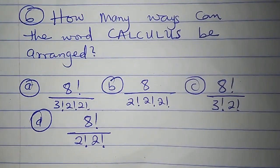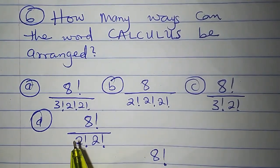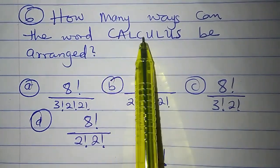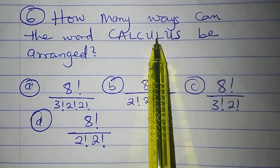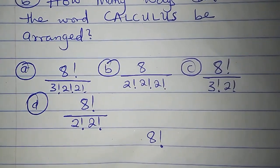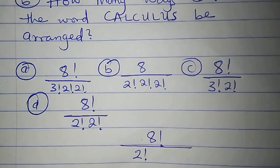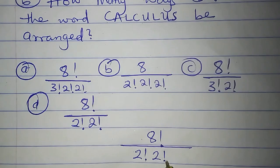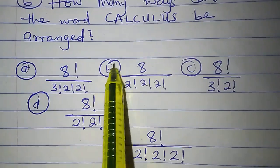For the next word, there are 8 letters, giving 8 factorial. I can see some letters that are repeated: letter C is repeated twice, letter L is repeated twice, and letter U is repeated twice. So I divide 8 factorial by 2 factorial for the repeated C, 2 factorial for the repeated L, and 2 factorial for the repeated U. I can see this in option B.